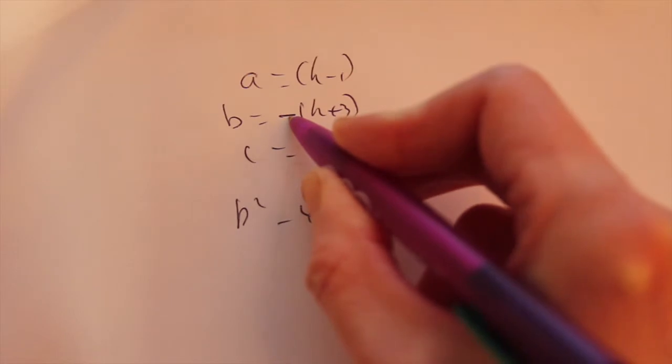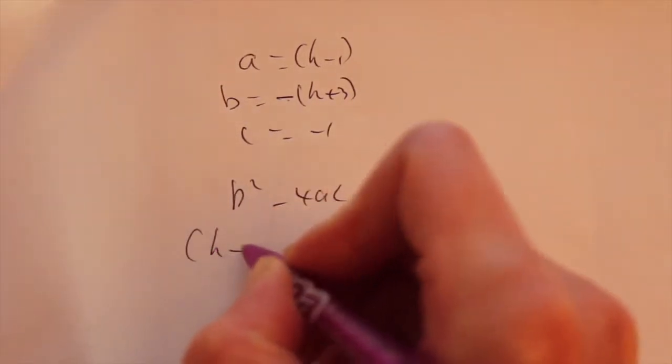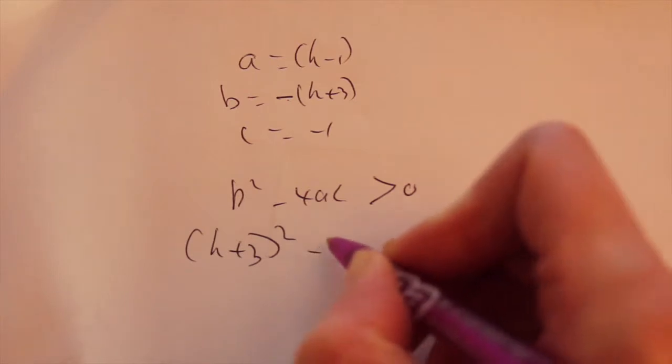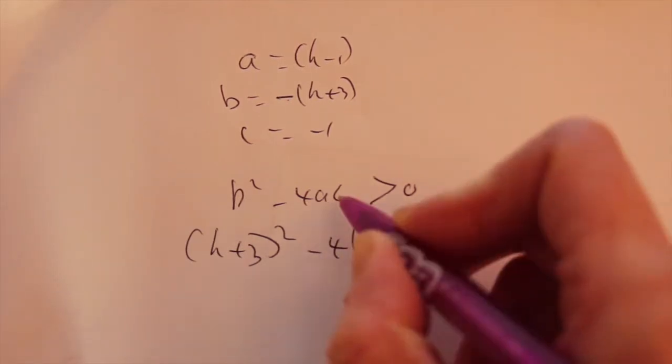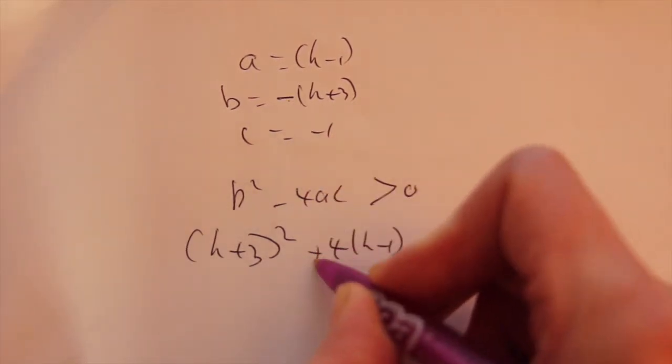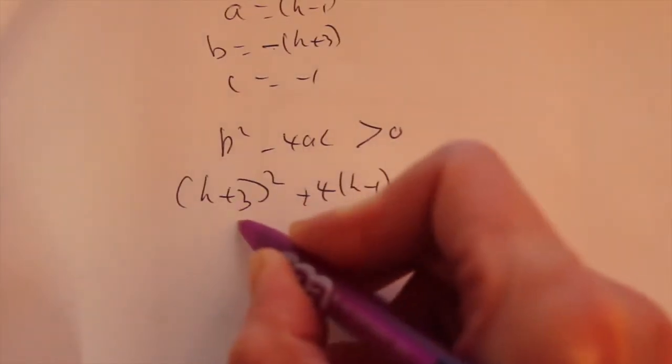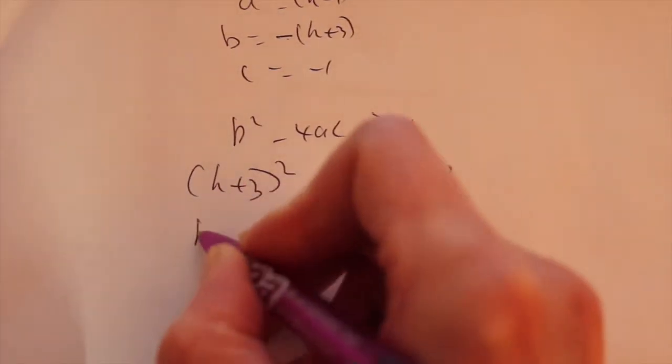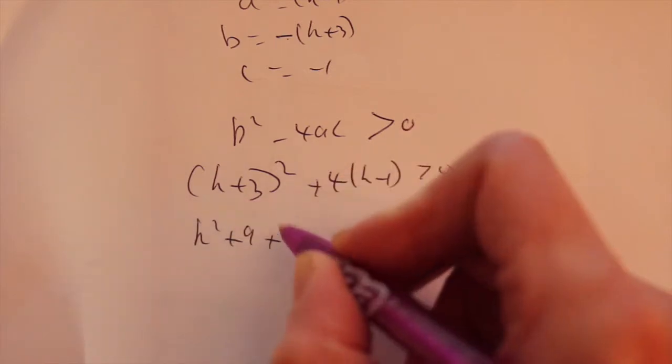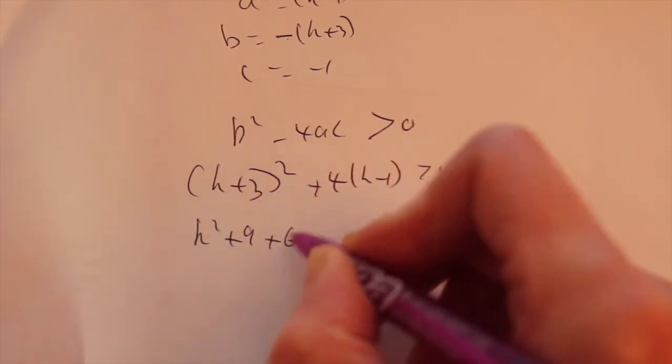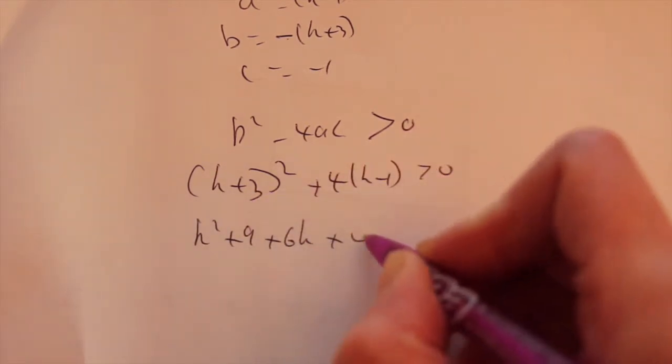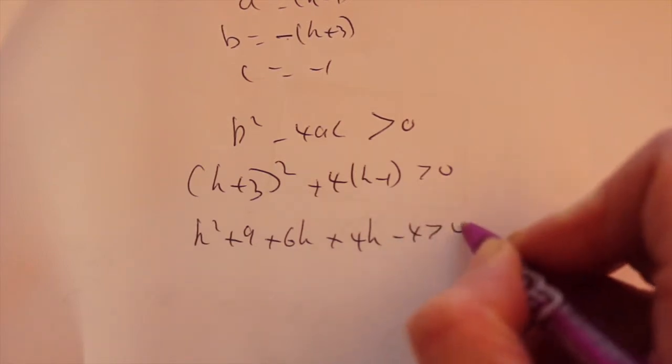b squared minus squared becomes positive. k plus 3 squared minus 4 times a times c. So a minus times a minus just becomes a plus. Just square out the bracket the quick way. Square the first term, square the last term and double the product. So the product is 3k, double it, 6k. Expand out this bracket, 4k minus 4 greater than 0.